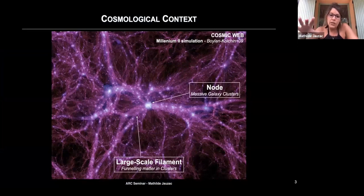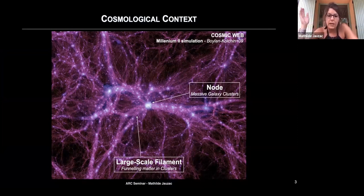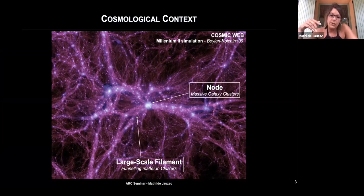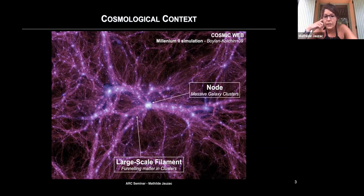This is a screenshot from the Millennium II simulation. What you can see is the distribution of dark matter at really large scales. Matter is accreted along filaments, and in my talk I'm going to concentrate on the intersection of those filaments, which host the really massive galaxy clusters I call cosmic beasts — also called nodes of the cosmic web.